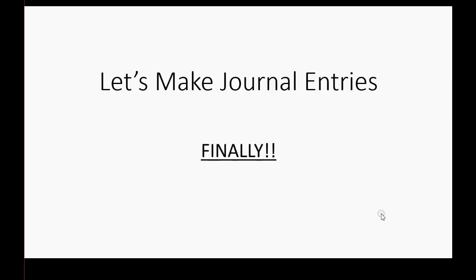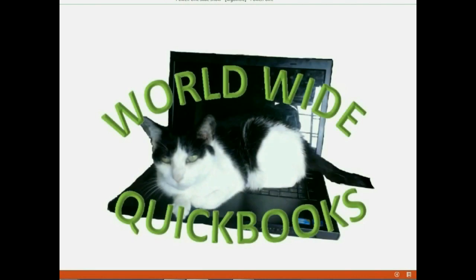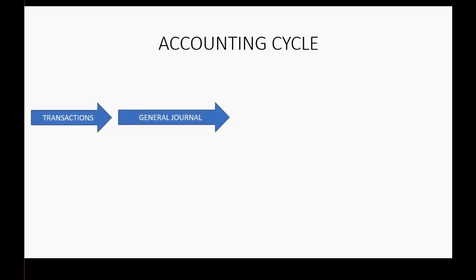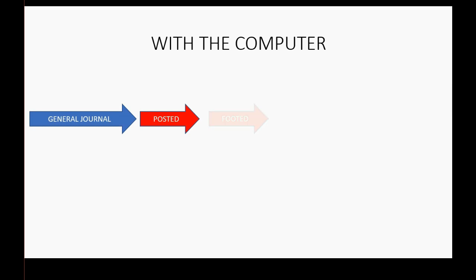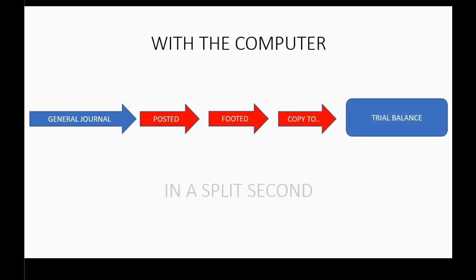Let's finally make journal entries. We remember the accounting cycle in the days before the computer involved several steps before we could find our accumulated totals in the trial balance. Now, with the computer, we can go directly from the journal and it will automatically post the transactions, foot the accounts, and copy the results to the trial balance in a split second. All we have to do is record the transaction in the journal and the results change in the trial balance like that.